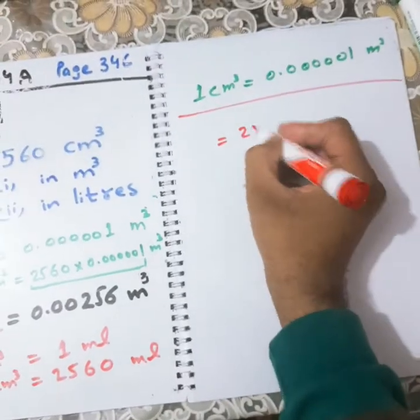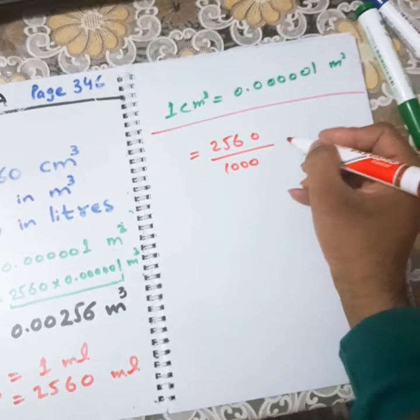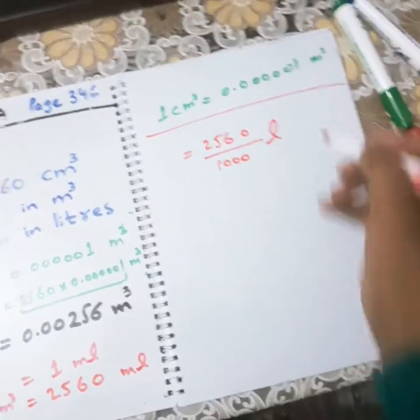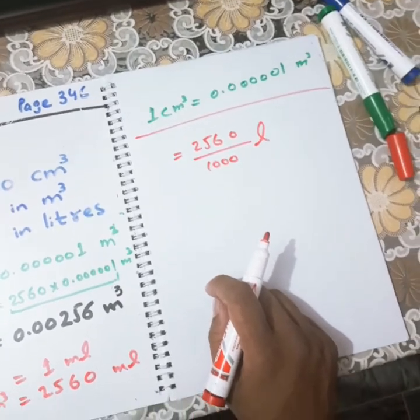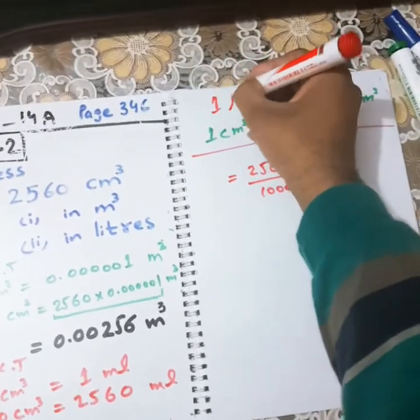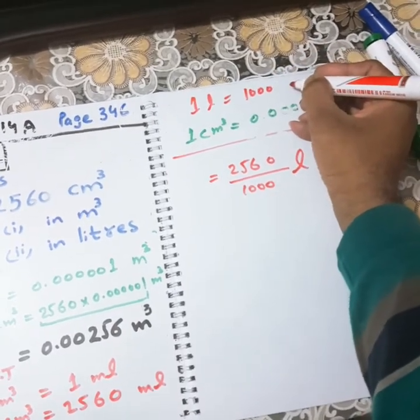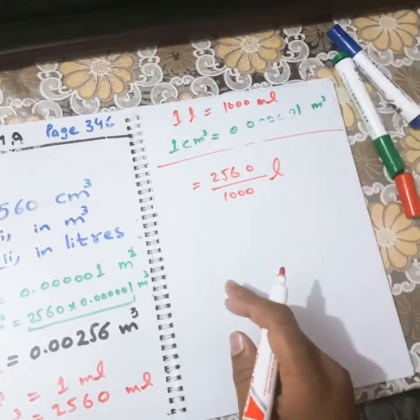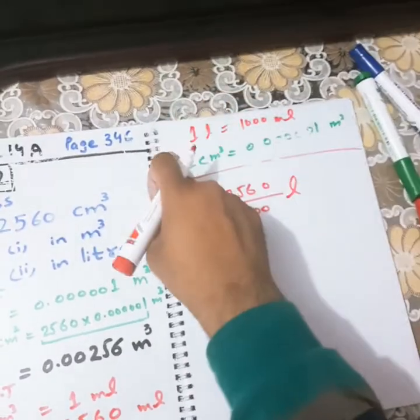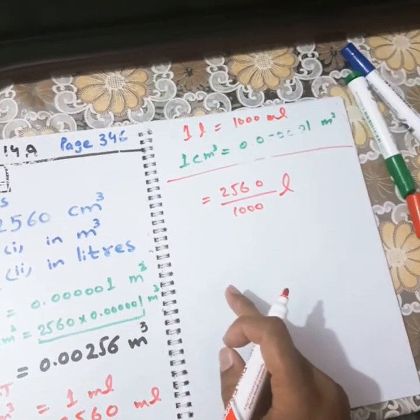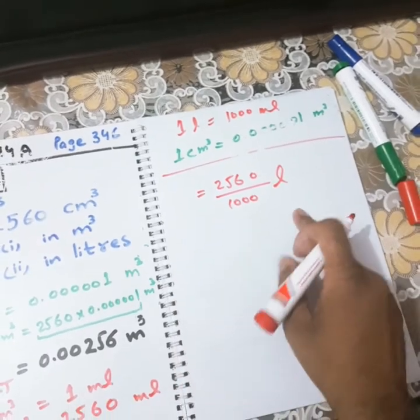So let's find it. So let's divide 2560 with the 1000 and we shall get answer into liters. Because when we have to convert milliliters into liters, we divide it by 1000. Because 1 liter is equal to 1000 milliliters. So that's why we shall divide it by 1000. Because now we are converting milliliters into liters. So in order to convert milliliters into liters from smaller to bigger quantity, we actually use the process of division.